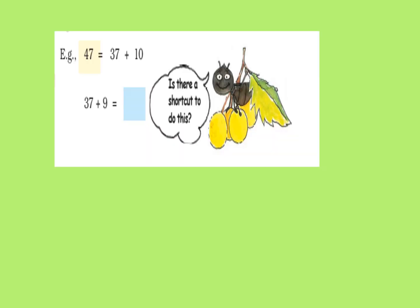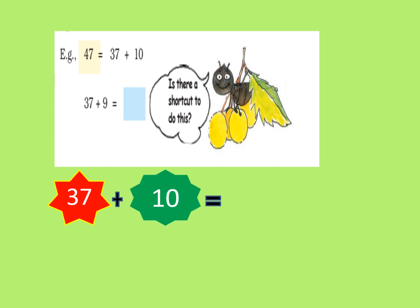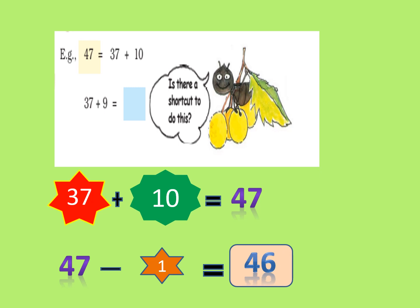Now let us solve these. What number is equal to 37 plus 10? Imagine 37 and jump one row above — we get 47. For 37 plus 9, jump one row above and then step towards the left. We write it as: 37 plus 10 equals 47, then 47 minus 1 equals 46. So our answer is 46.